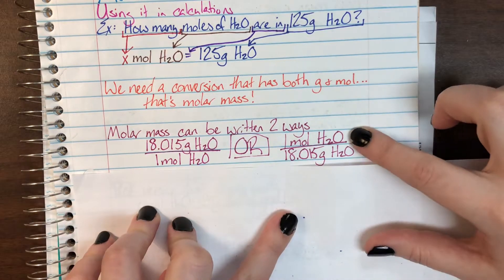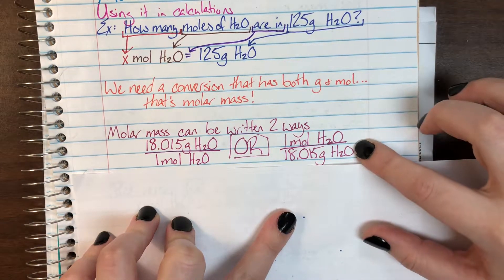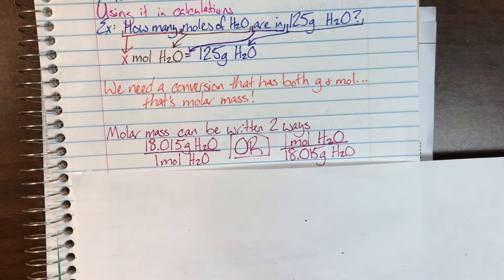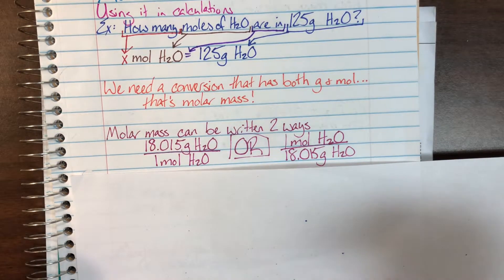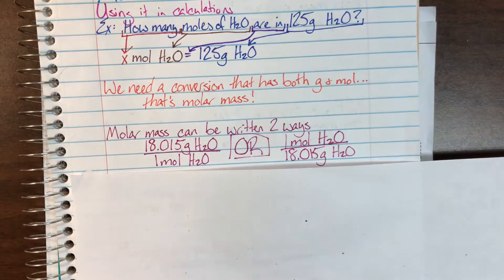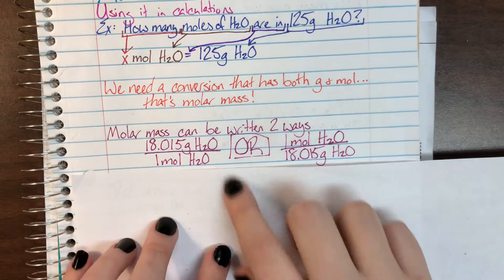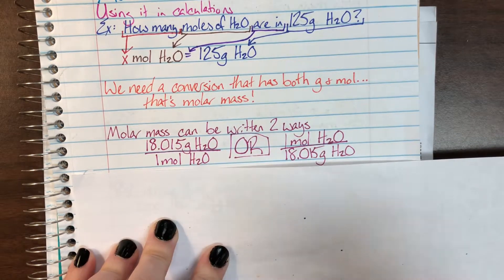I can also say for every one mole of water, there's 18.015 grams of water. This is the same thing as me saying for every two girls, I have three boys. Or for every three boys, I have two girls. I'm presenting the same information. I just changed the order in which I set it. But it doesn't actually change anything. This doesn't change the value at all because this is a ratio.